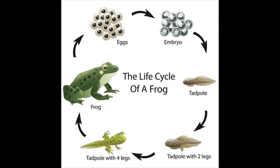A butterfly's life cycle is somewhat different from most animals because it goes through a stage called metamorphosis. Metamorphosis is a process in which a living thing changes or transforms from one shape into another — it literally changes its entire appearance. A frog also goes through metamorphosis: it starts as a tadpole, then grows legs and arms, loses its tail, and becomes a fully grown frog.